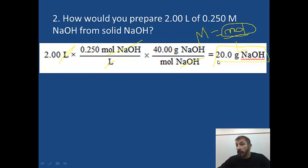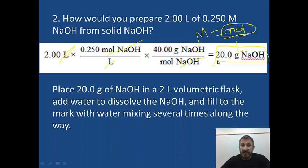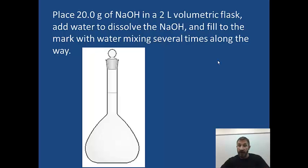Now the question asks how would you prepare? This is only part of the answer. The other part would be this: you want to place 20 grams of sodium hydroxide in a 2 liter volumetric flask, add water to dissolve the sodium hydroxide, and fill to the mark with water several times mixing along the way. What does that mean? What's a volumetric flask? Well a volumetric flask looks like this. Here I have a 2 liter flask.